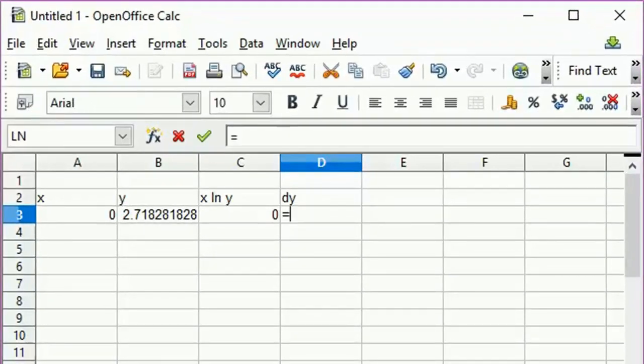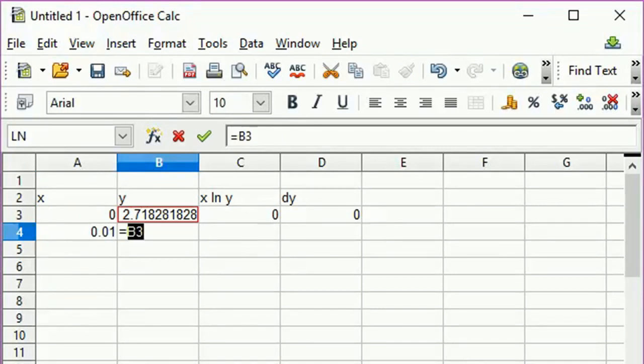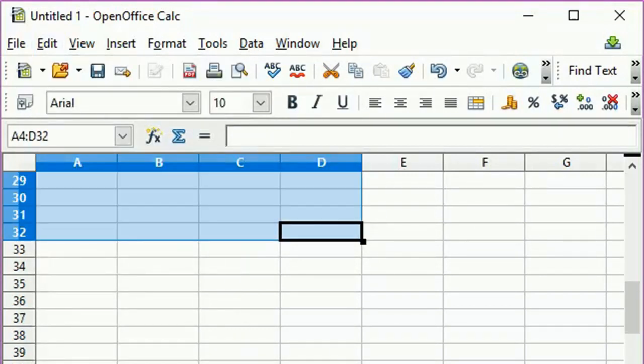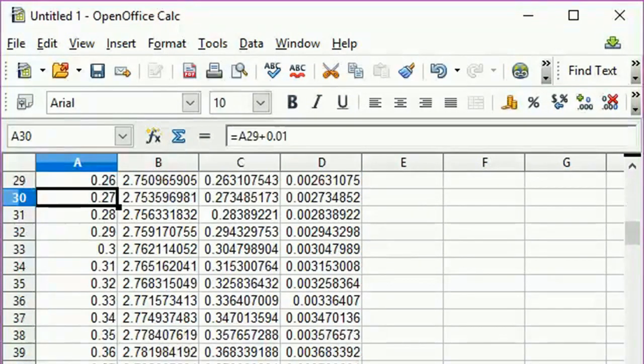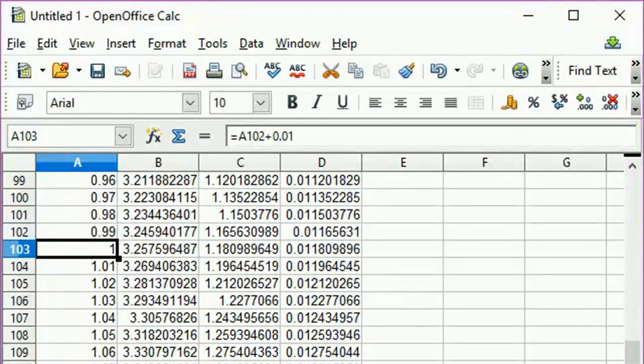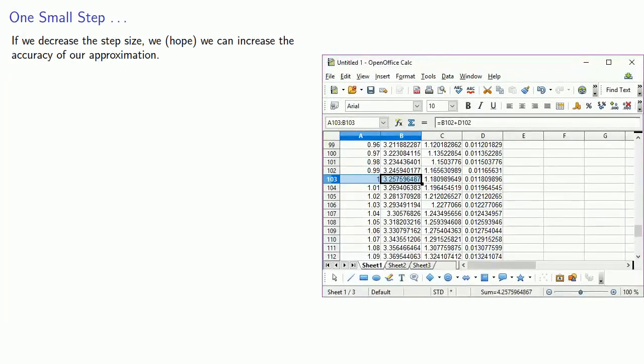Now that's with our step size delta x equals 0.1. If we decrease the step size, we hope we can increase the accuracy of our approximation. So if we use a step size of 0.01, and you really don't want to do this by hand, so use a computer, spreadsheet, something like that. And we find that we eventually arrive at a value which we hope gives us a better approximation to y(1).